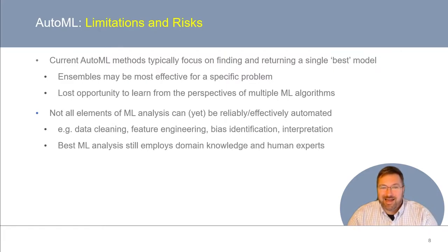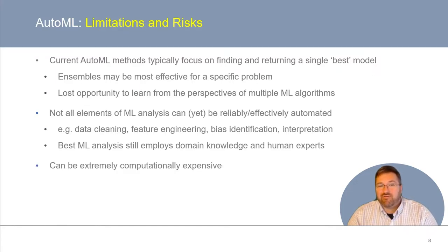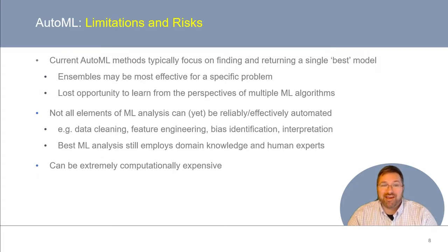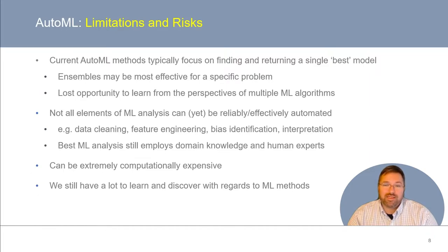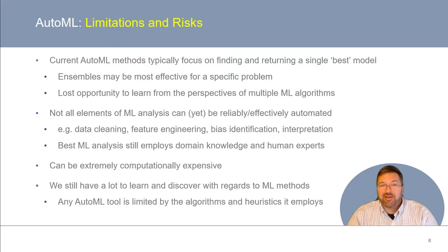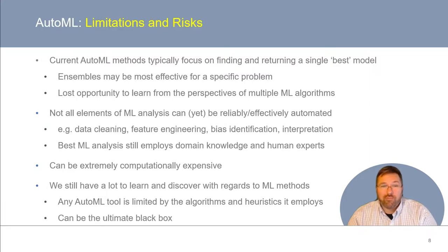Also, not all elements of an analysis pipeline can yet be reliably or effectively automated — some still require human intelligence and expertise. These include aspects of data cleaning, feature engineering, the identification of sources of bias in data or models, and model interpretation. The best machine learning analysis still employs domain knowledge and human experts as part of the process. Another drawback is that AutoML can be very computationally expensive, and any AutoML tool will be limited by the specific algorithms and heuristics it employs. In some ways, AutoML could end up being the ultimate black box, and we should be careful not to trade convenience for understanding.